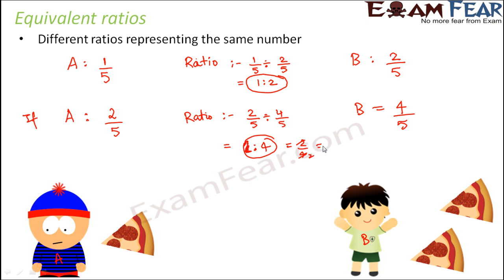2 is to 4 can be written as 2/4. This is 1/2, which can be written as 1 is to 2. So 2 is to 4, even though a different ratio, also means the same basic ratio, which is 1 is to 2. Now let's look at yet another example.